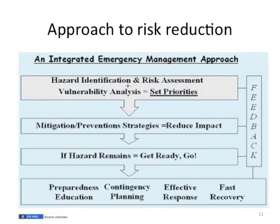The figure presents an approach to risk reduction. The integrated emergency management approach involves hazard identification and risk assessment, plus vulnerability analysis, which leads to setting priorities. This goes to mitigation and prevention strategies to reduce the impact of disasters, then to preparedness — including education, contingency planning, effective response, and fast recovery. All this is underlined by feedback at all stages.